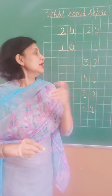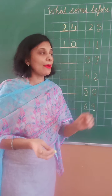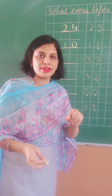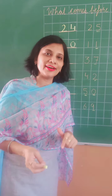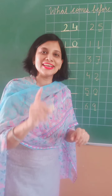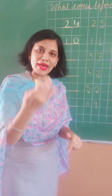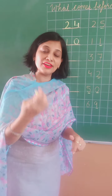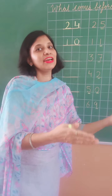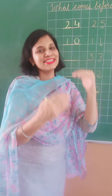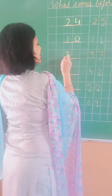Now the number is 37. Aapne first digit dekhna hai — 7. Theek na? 7 se pehle kya aata hai? 6. So 37 se pehle kya aata hai? 36. The answer is 36.